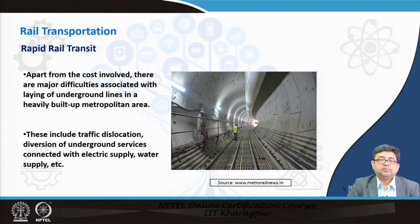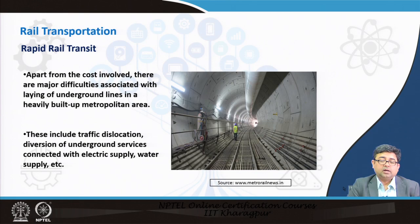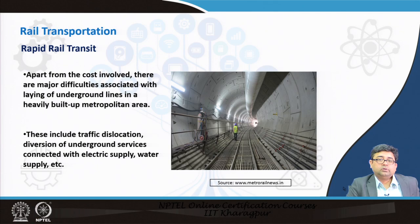An underground tunnel must be constructed to have metro rail lines underground. Kolkata's first metro line was largely underground. The extensions are mostly overground, apart from a stretch going under the river Hooghly to connect to Howrah rail station, which is again underground. Underground construction costs include not only traffic dislocation but also diversion of underground services such as electric supply and water supply — relocation of utilities alone adds significant cost.